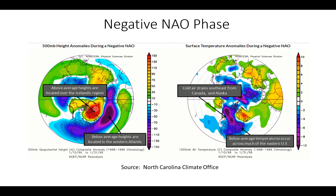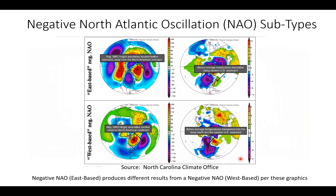This blocking upper-level ridging is definitely prevalent during negative phases of NAO, with upper-level height rises. On the right, we see the surface temperature anomalies during the negative NAO. When we get this anomalous blocking pattern with upper-level height rises into Greenland and even further west toward Hudson Bay, we generally get cold air draining southeast from Canada and Alaska into the United States. Look at how below-normal temperatures are across much of the eastern U.S. during the negative phase — this was an example from January of 1966 with a negative NAO phase.